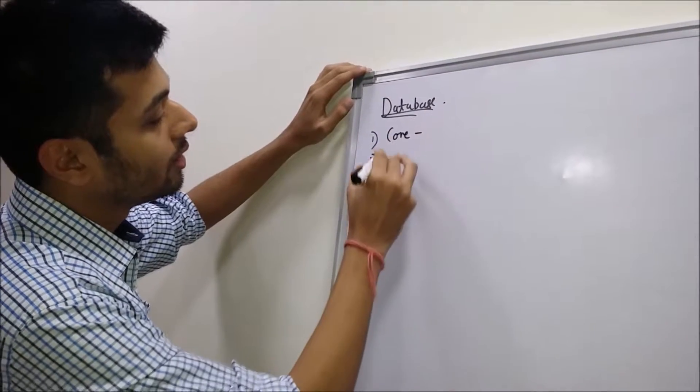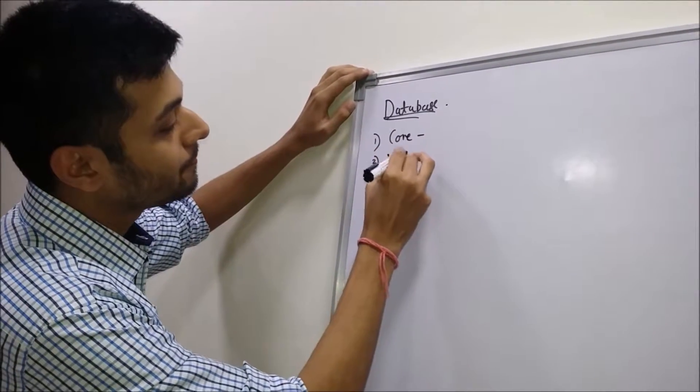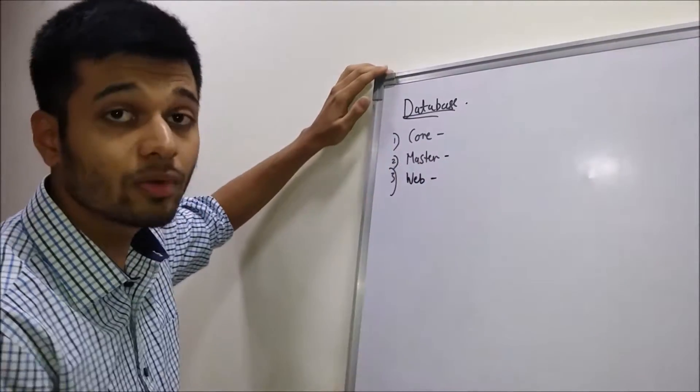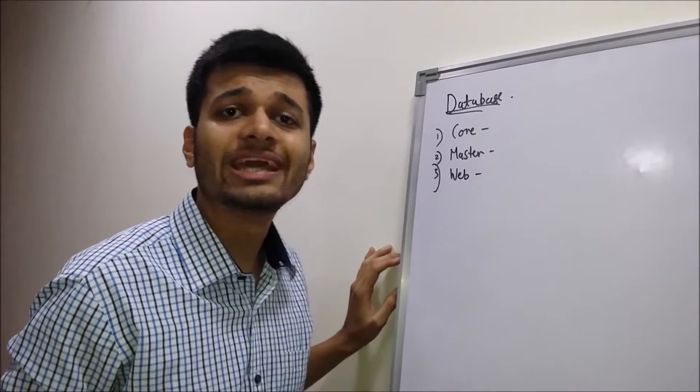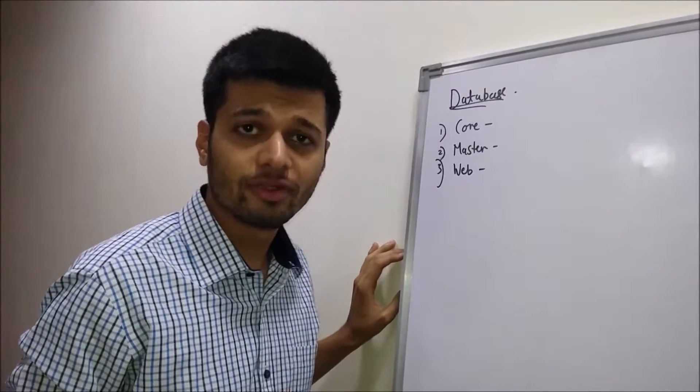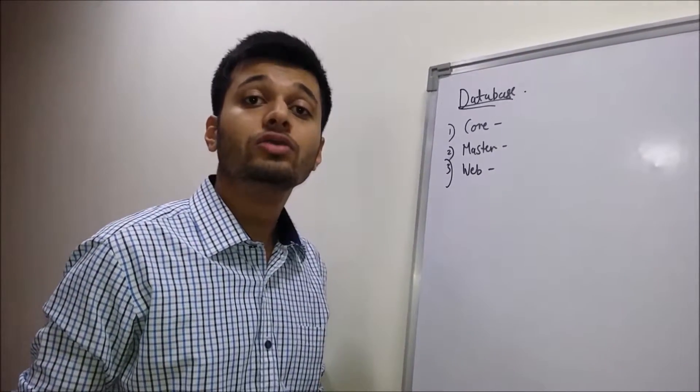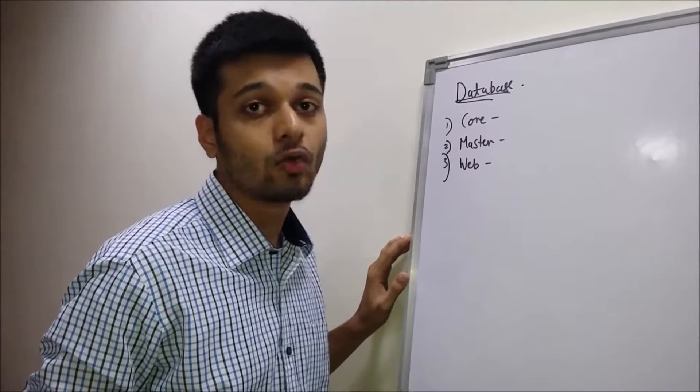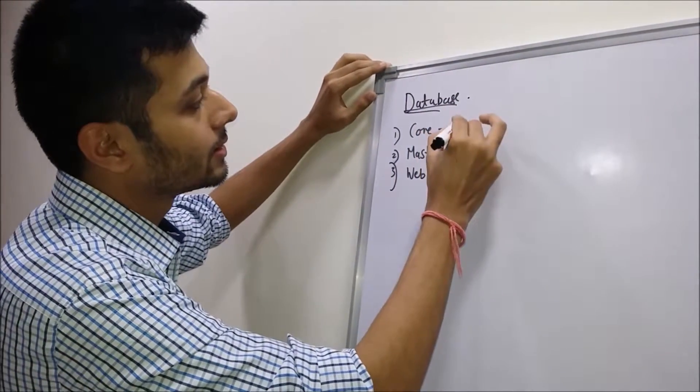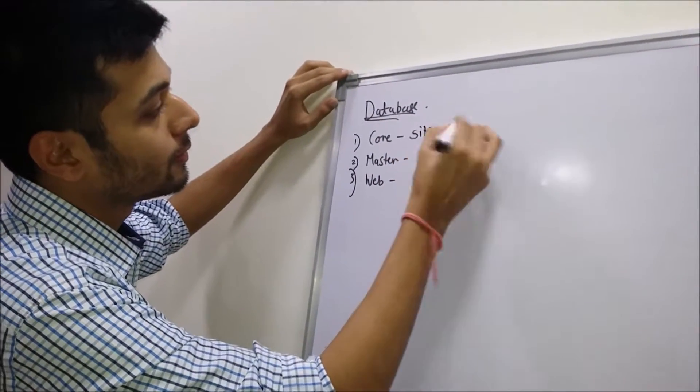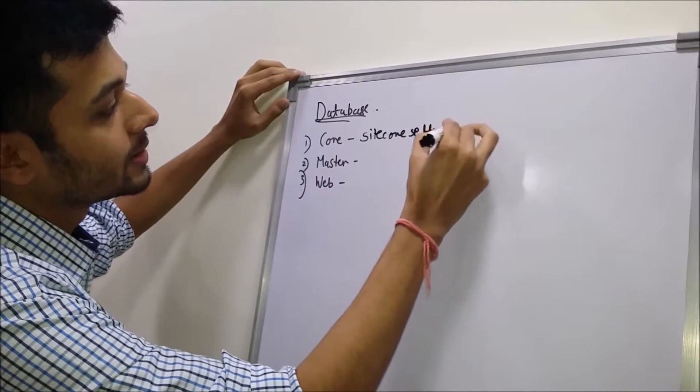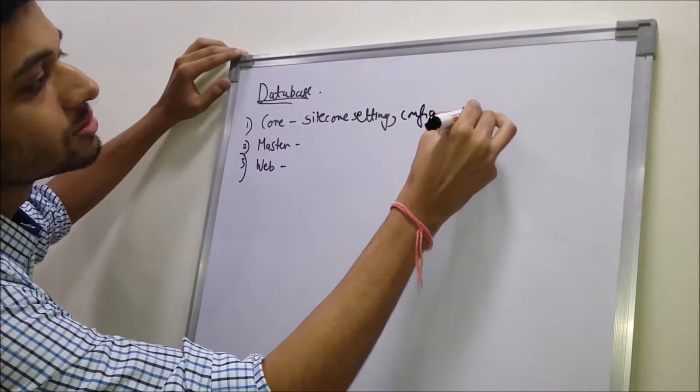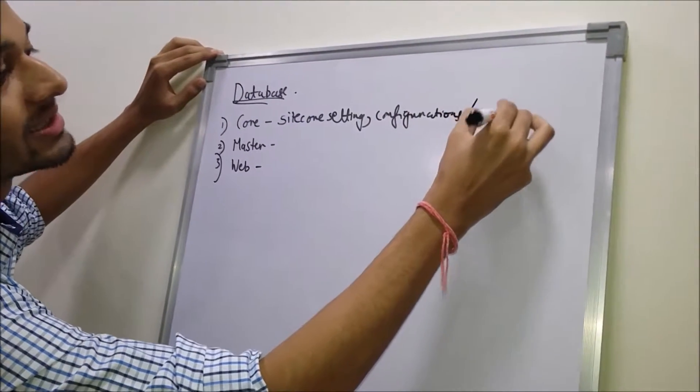The first one is Core, next is Master, and the third one is Web. So let's see what is Core. If you want to change some Sitecore settings or do some configurations, or you can also do some customizations, you can take the help of Core database for Sitecore settings, configurations, or any customizations.